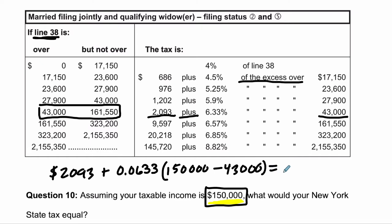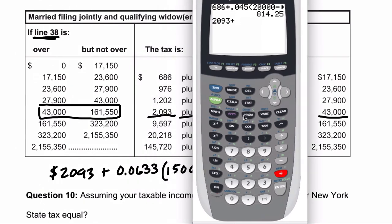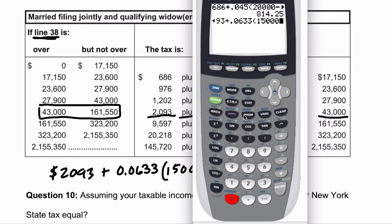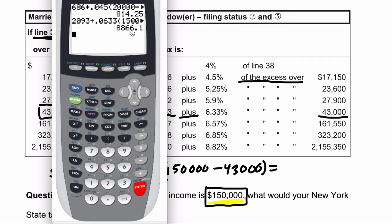If we calculate this, we'll have our answer, so let's do that. So we've got the calculator: 2093, plus 0.0633, times 150,000, minus 43,000. Enter. $8,866.10 — and that's it, hope that helped.